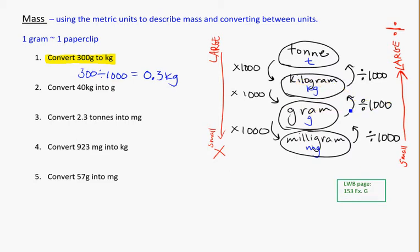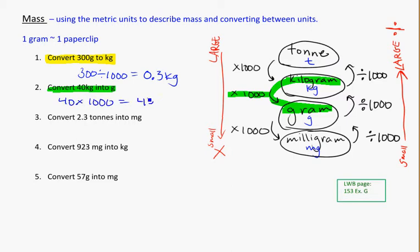Converting 40 kilograms into grams — that's going the other way around. Here I need to multiply by 1,000, because I'm going from a bigger unit, kilograms, into something smaller. So that's going to be 40 times 1,000, which equals 40,000 grams. Knowing that there are 1,000 grams in every kilogram gives me 40,000 grams. I multiply going from the larger unit down to the smaller unit, because there are a lot more of those smaller grams inside one kilogram, so you'd expect your answer to be more of something.